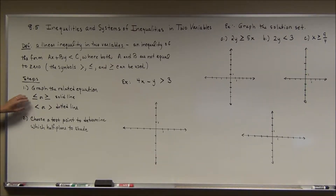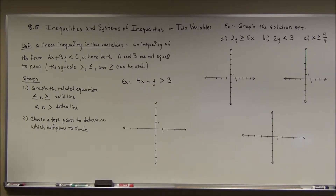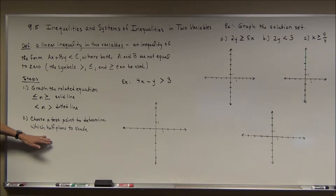Once we have the boundary line from the related equation, we determine which half plane has our solution, because the line divides the Cartesian plane into two half planes. The boundary line separates the answers from those that are not answers. We use a test point to determine which side to shade — just like on a number line we shaded to one side of our key value, here we shade to one side of our boundary line.